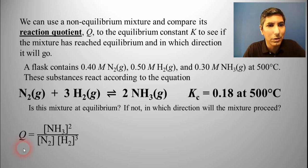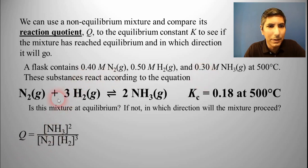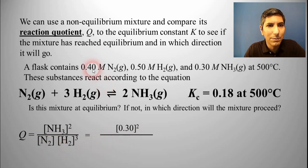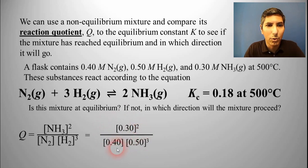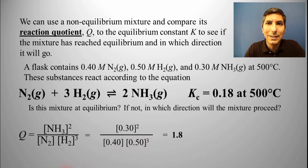Q is the reaction quotient. We're going to plug these numbers into that expression. Ammonia is 0.30, so that's going to be squared. In the denominator, nitrogen is 0.40 molar, and hydrogen is 0.50 molar, which is going to be cubed. When you key these into your calculator — 0.3 squared divided by 0.4 divided by 0.5 cubed — you'll find that the reaction quotient Q is 1.8.